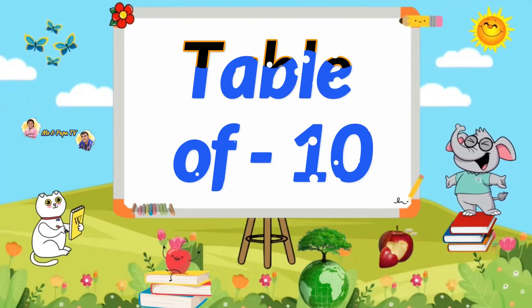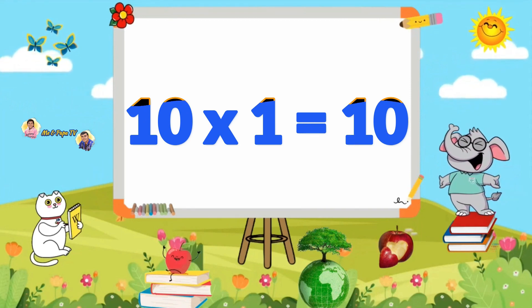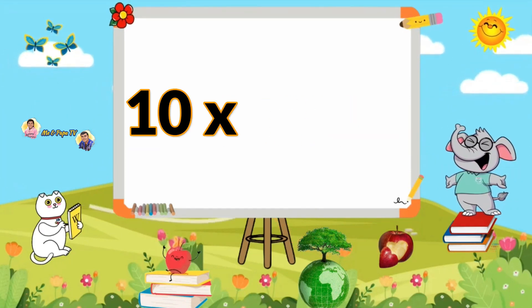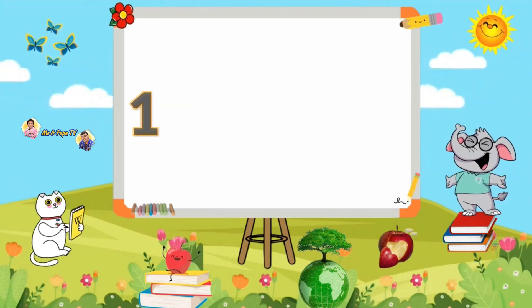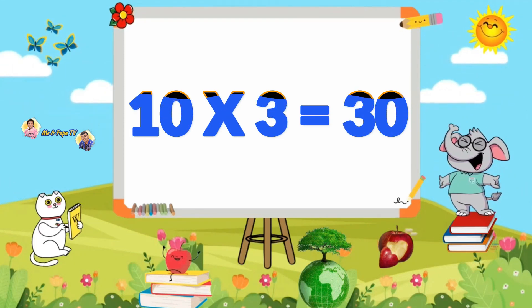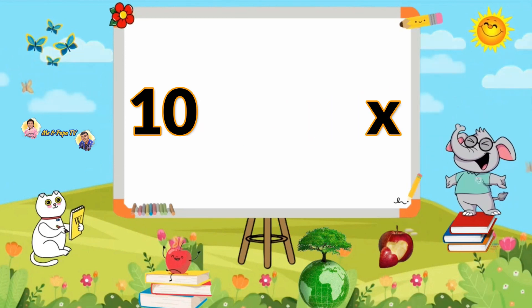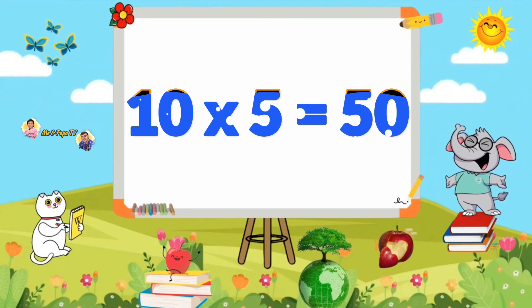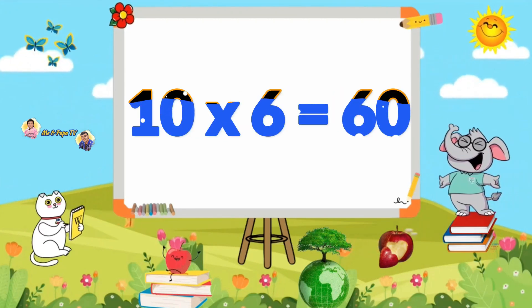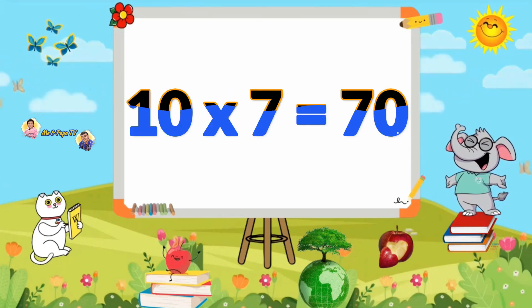Learn Table of 10. 10×1=10, 10×2=20, 10×3=30, 10×4=40, 10×5=50, 10×6=60, 10×7=70, 10×8=80, 10×9=90, 10×10=100.